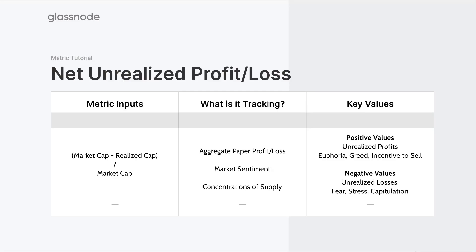With positive values, it indicates unrealized profit across the board. Higher values can also indicate euphoria, greed, and an increasing incentive to sell. In very high profitability regions, it can suggest we're moving into a euphoric blow-off top. Conversely, negative values indicate the aggregate market is below its cost basis, holding unrealized losses, symbolized by fear, stress, and eventually an ultimate capitulation at the bottom of bearish markets.